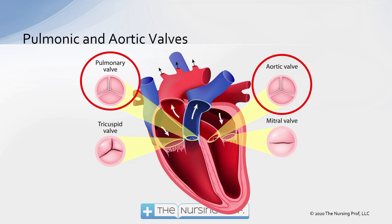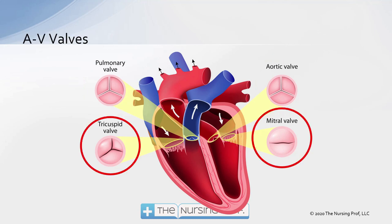So again: the atria contract, the tricuspid and mitral valves close, and we get our S1, our first heart sound. Then the ventricles contract, and we get our second heart sound — S2 — from our aortic and pulmonic valves when they close. So it's the closing of the valves that we're hearing, not the contraction of the heart. That part you don't hear — we're hearing the valves instead.